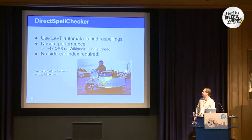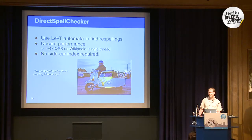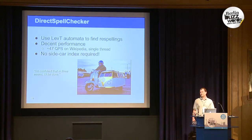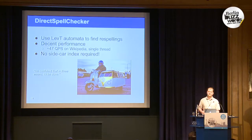One interesting thing is that now we can spellcheck directly from the index because we have this faster automata. Before in Lucene and Solr, you would have to have an additional index for spellchecking, which is really annoying because who wants a secondary index being kept in sync with the main one? Now you don't need the sidecar index at all — you can check straight from the index. In order to do that, we had to do a lot of work implementing these algorithms, based on a 60-page paper. One contributor said he'd be done in three weeks, and he did it.